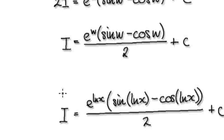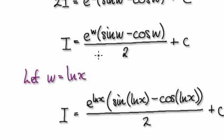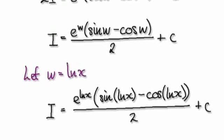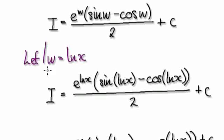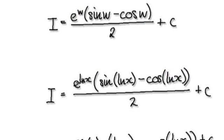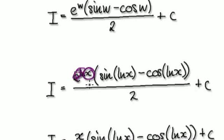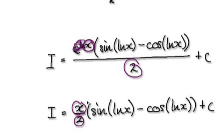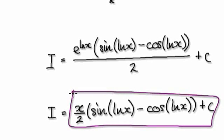Earlier we said let w = ln(x). So now we can substitute w = ln(x) back into the expression — back into here, and back into here. That takes us to the final answer. Note that e raised to the power of ln(x) simplifies to just x, since e and natural log cancel out. So the final answer is x over two times the full expression, with w replaced by ln(x) throughout.